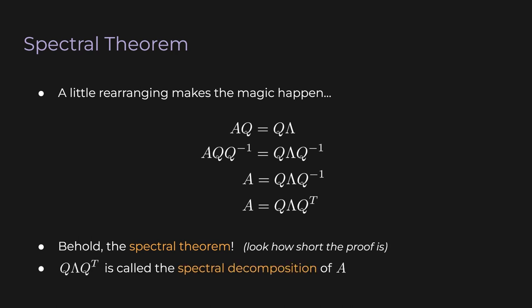By the way, Q Lambda Q transpose is called the spectral decomposition of A. What we just did was amazing — who would have thought that eigenvectors are so central to the structure of symmetric matrices, and not just some eigenvectors but all of them, all here in this nice pleasing package. It's incredible how much insight we can extract from the simple equation Av equals lambda v — the eigenvector definition. Everything we did in this lecture came from that.